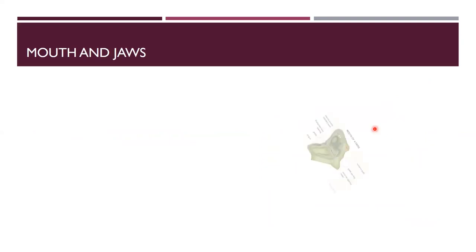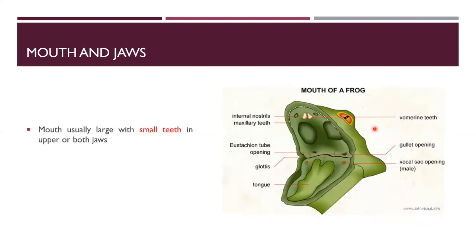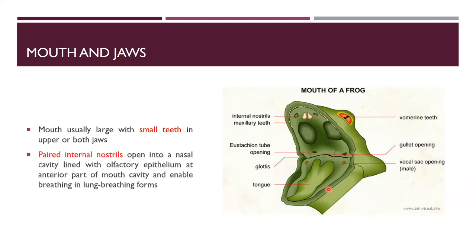The mouth is usually large with small teeth in the upper and lower jaws. Amphibians have paired internal nostrils leading to the nasal cavity, connecting to the anterior part of the mouth cavity and enabling breathing in lung-breathing forms.